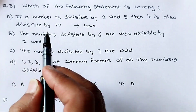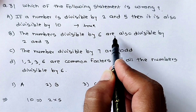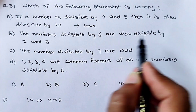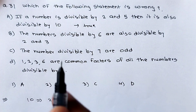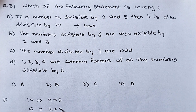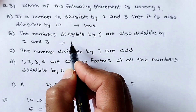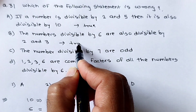Now see the next statement: the numbers divisible by 6 are also divisible by 2 and 3. If a number is divisible by 6, the factors of 6 are 2 and 3. So numbers which are divisible by 6 are also divisible by 2 and 3, because 2 and 3 are the factors of 6. So this statement is also true.